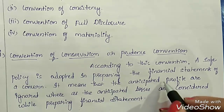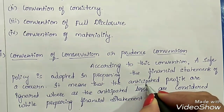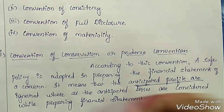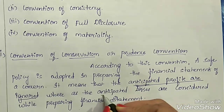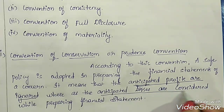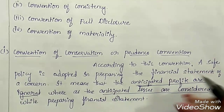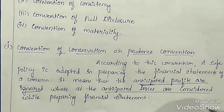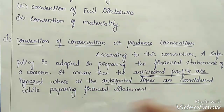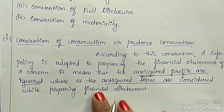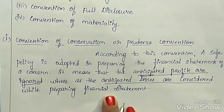It means that anticipated profits are ignored, whereas anticipated losses are considered while preparing financial statements. Whatever possible profits can arise in the business organization, they need to be ignored, because profits may arise or may not arise, so they won't affect our business organization.